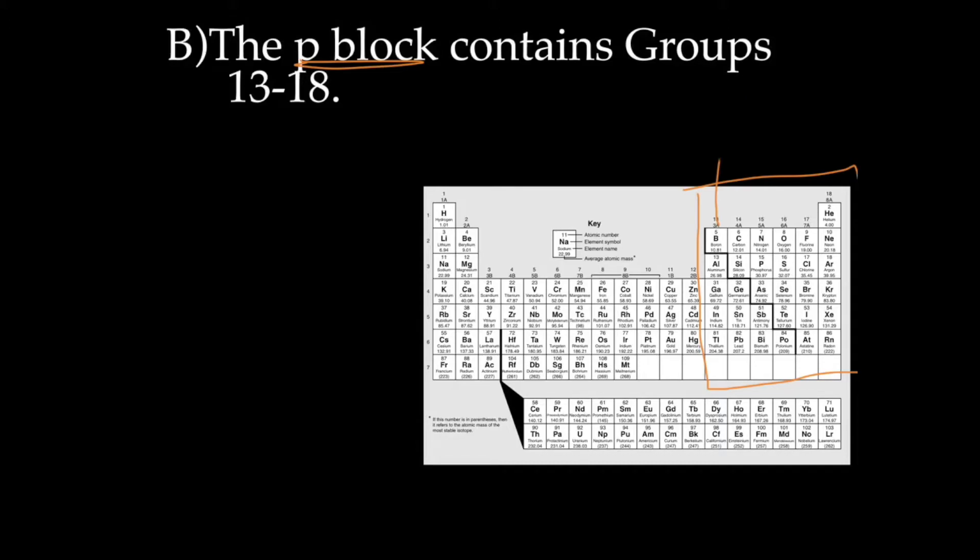Everybody in group 3a ends in something s2, 2p2. Everybody in 5a ends in s2p3, and so forth, all the way up to the noble gases, which end in s2p6, all of them except helium.